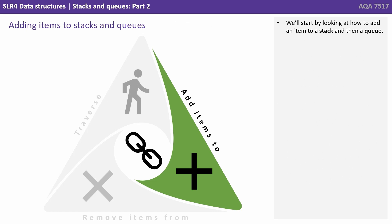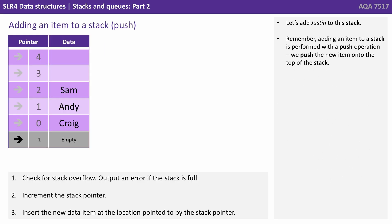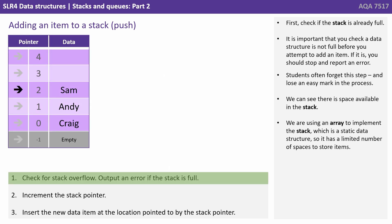We'll start by looking at how to add an item to a stack and then a queue. Here we have a stack — let's add Justin to it. Remember, adding an item to a stack is performed with a push operation; we push the new item onto the top of the stack. First, we check if the stack is already full. It's important that you check a data structure is not full before you attempt to add an item. If it is, you should stop and report an error. Students often forget this step and lose an easy mark in the process.